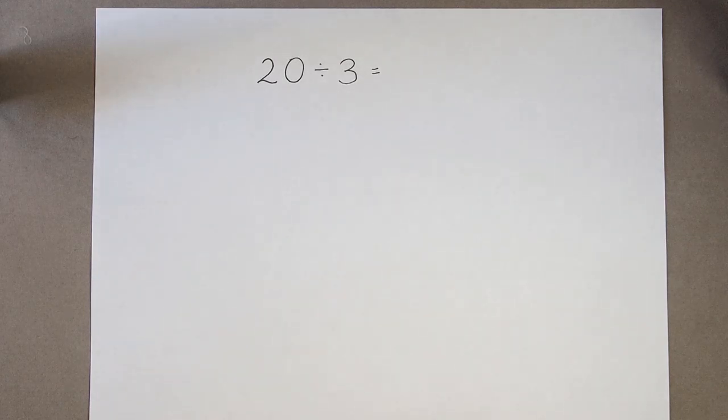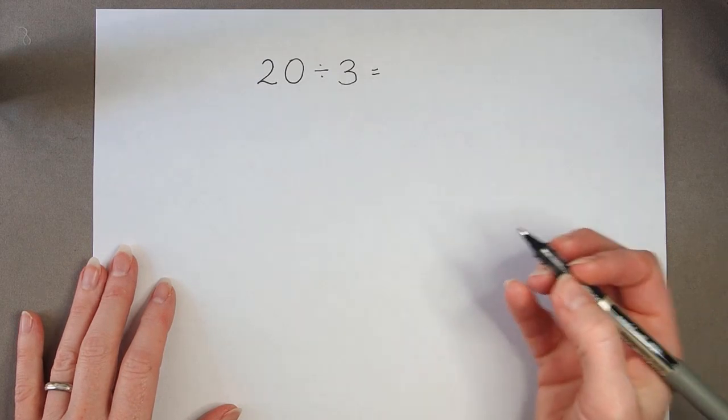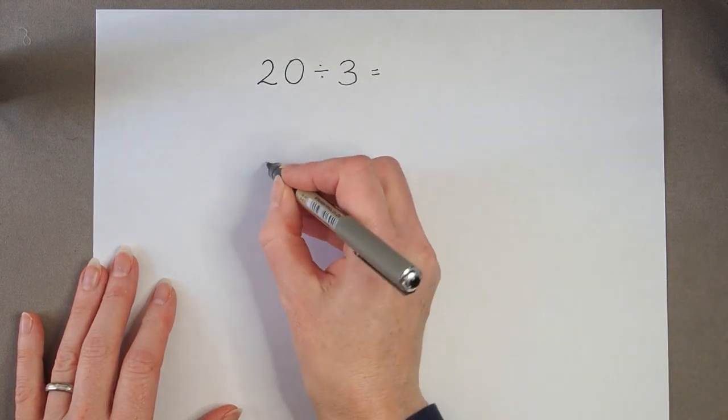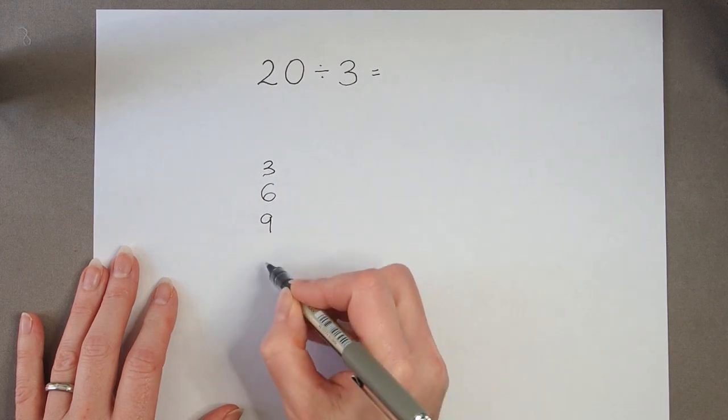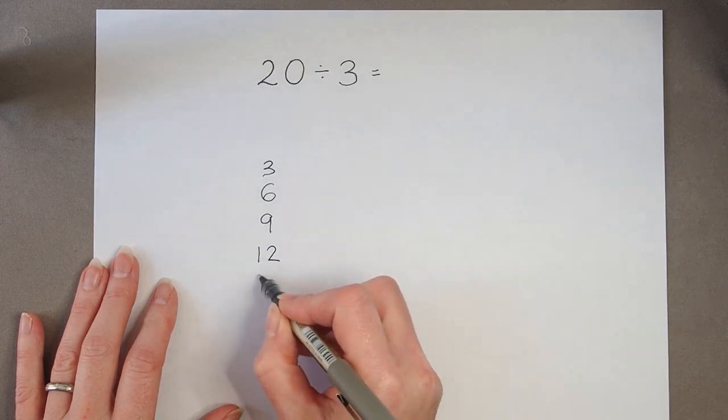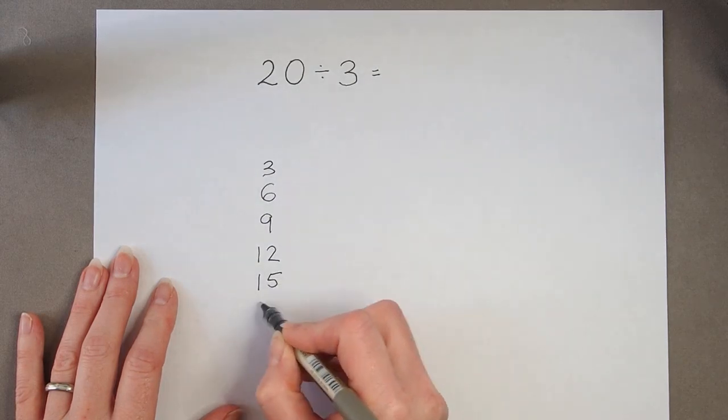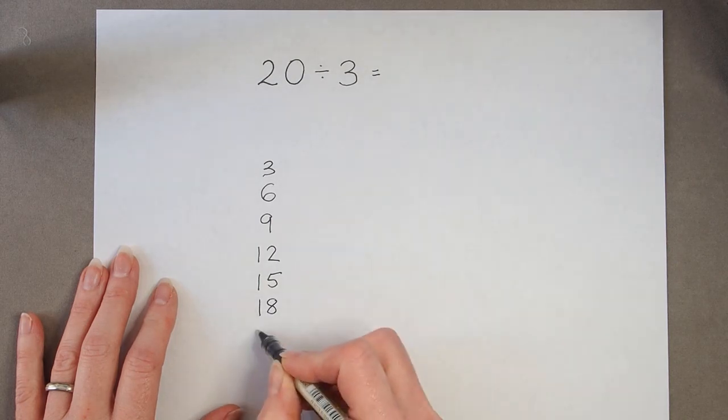So if we look at another calculation, we've got 20 divided by 3. So without using any counters or other apparatus, we could write down our multiples of 3. 3, 6, 9, 12, 15, 18, 21.